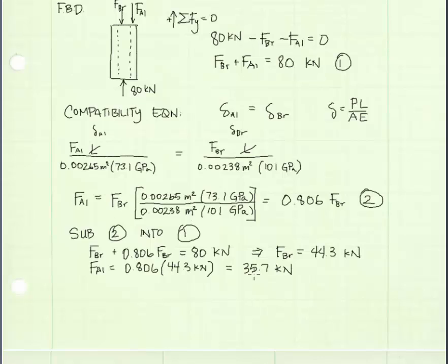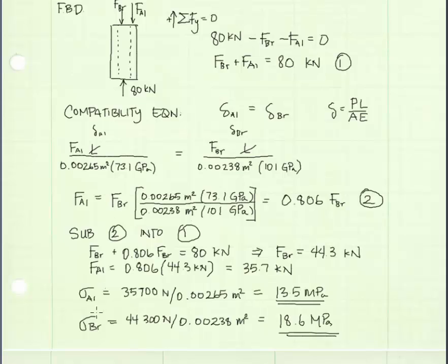The problem asked us to find the average normal stress in the aluminum and in the brass. We can find that using the equation normal stress equals the axial load divided by the cross-sectional area. For the stress in the aluminum, the axial force is 35,700 newtons divided by the cross-sectional area, which is 13.5 megapascals. For stress in the brass, using the same equation, I get 18.6 megapascals as the average normal stress. And we're done.